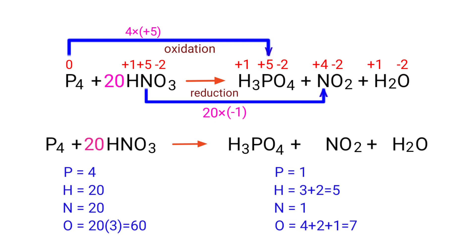The number of atoms are not balanced on both sides. To balance the chemical equation, we need to make use of coefficients. A coefficient is a number that we place in front of a chemical formula.